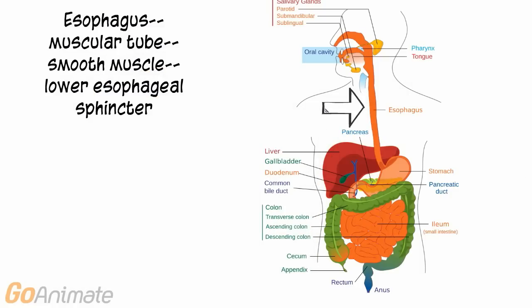The esophagus is a muscular tube containing smooth muscle. The lower esophageal sphincter is at the bottom of the esophagus. The sphincter opens during swallowing to let food into the stomach. A peristaltic wave propagates through the esophagus during swallowing.